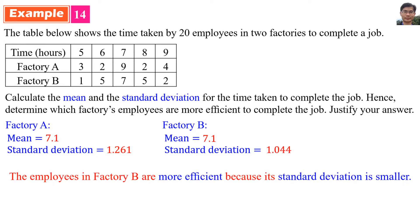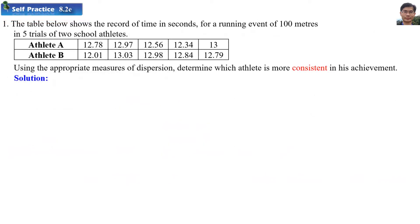In conclusion, the employees in Factory B are more efficient because its standard deviation is smaller. Self-practice 8.2e, number one: the table below shows the record of time in seconds for a running event of 100 meters in 5 trials of two school athletes. For example, 12.78 means Athlete A used 12.78 seconds to complete the 100 meters in the first trial, and in the fifth trial, Athlete A used 13 seconds.